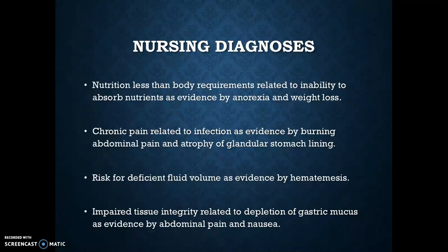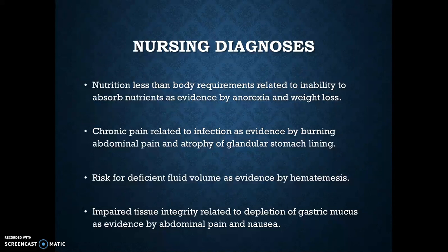Some nursing diagnoses for gastritis are: nutrition less than body requirements related to inability to absorb nutrients, as evidenced by anorexia or weight loss; chronic pain related to infection, as evidenced by burning abdominal pain and atrophy of glandular stomach lining; risk for deficient fluid volume, as evidenced by hematemesis; and impaired tissue integrity related to depletion of gastric mucus, as evidenced by abdominal pain and nausea. The first three are more related to chronic gastritis, while the last can indicate both. Also, even though NSAIDs relieve inflammation experienced with gastritis, they actually deplete the gastric mucus, causing more irritation and thus impaired tissue integrity.